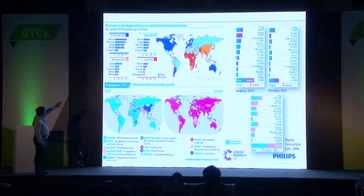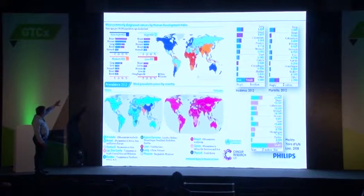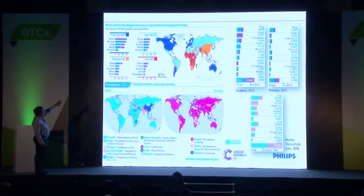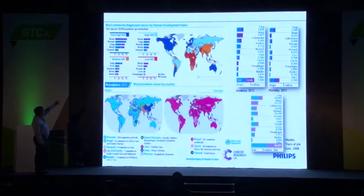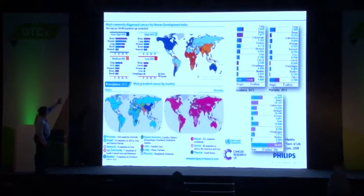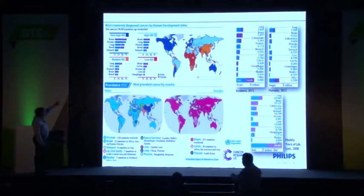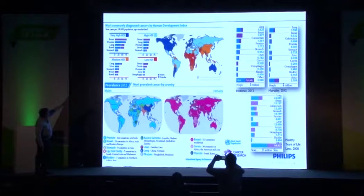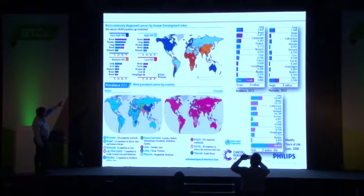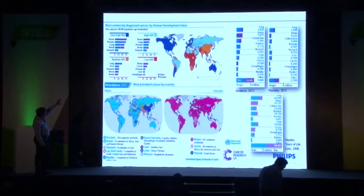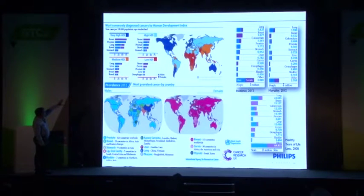India comes under medium HDI, where breast cancer is at fourth place. In other groups, it ranks even higher. Looking at the graph — which represents per one lakh population — around 75 people are suffering from breast cancer, and this is even in very developed countries like the US and UK. It's a common trend everywhere.